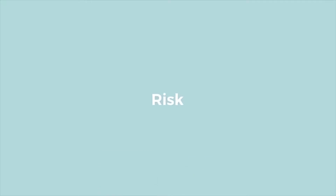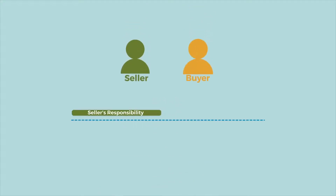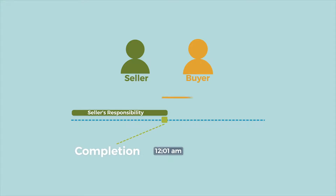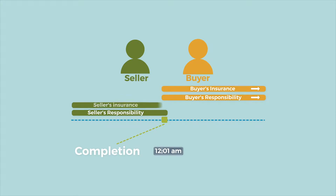Risk. This section provides that the seller will remain responsible for all risks relating to the property and all other items included in the purchase and sale until 12:01 am on the completion date. The buyer should ensure they have property insurance from and after that time. The seller may also want to consider insuring the property through to possession.